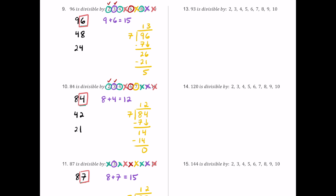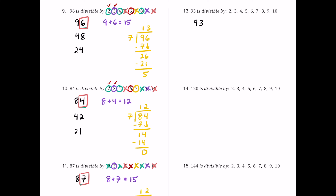For number 13, we have 93. It's an odd number, so 2, 4, 8, 6, and 10 all fail right away. The sum 9 plus 3 is 12, a multiple of 3 but not 9. The last digit is 3, not 5 or 0, so 5 fails. For 7: 93 divided by 7 gives a quotient with a remainder, so 7 fails. Only 3 works for 93.